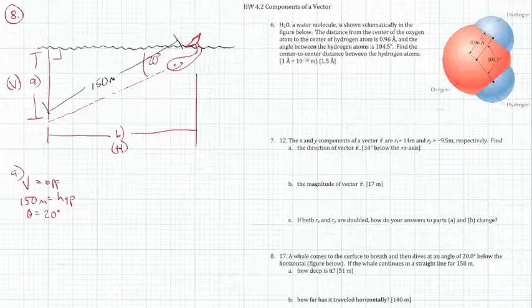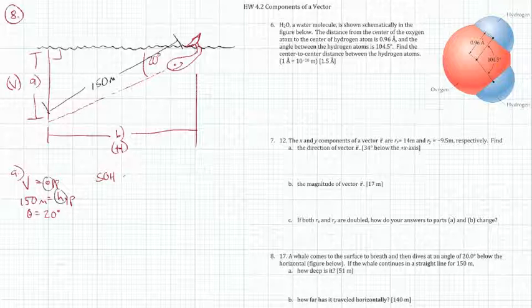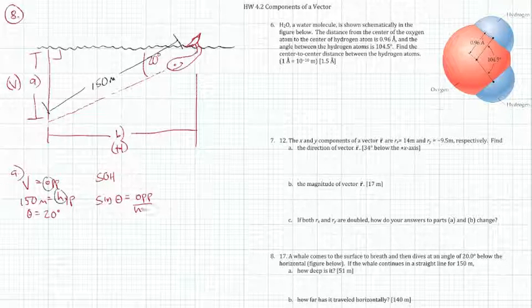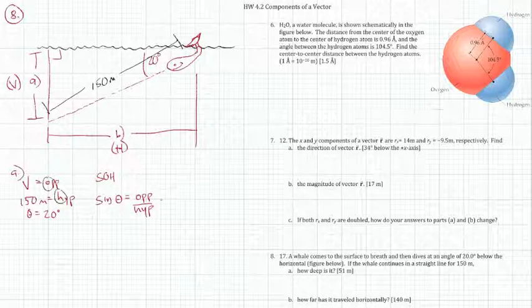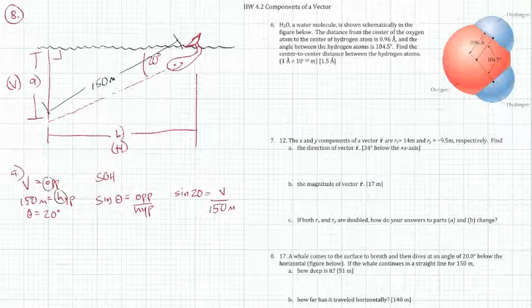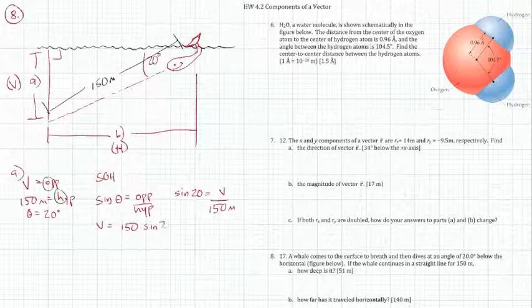So, what sine function do we use? Well, what sides do we have? We have an O and an H. And if you go back and look at your SOH CAH TOA, that S-O-H fits with that, which means that the sine of the angle equals opposite over the hypotenuse. We want to get the opposite by itself. Let me rewrite this again. The sine of 20 equals V, the opposite, over 150 meters. So, that means if we multiply both sides by 150, we'll get V by itself, and that means V, vertical distance, or the depth of the whale...